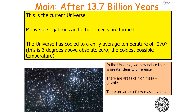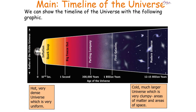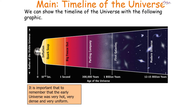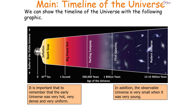Now, 13.7 billion years after the Big Bang, we are here with many stars, galaxies, and other objects formed. The universe has cooled to an average temperature of minus 270 degrees Celsius. We can see a timeline of the universe: we had a very hot, very dense, very uniform universe at the beginning, and now have a cold, much larger, clumpy universe with areas of matter and areas of empty space. The observable universe was very small when it was very young.